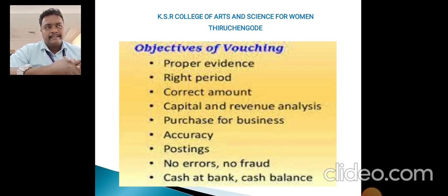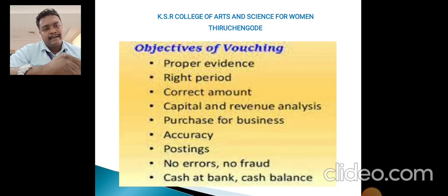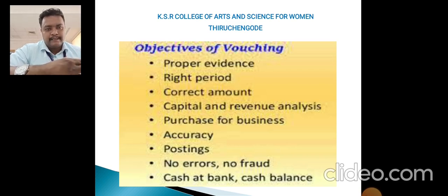The next objective is the correct amount — for example, if the transaction amount is one lakh but the voucher mistakenly shows one lakh fifty thousand, the amount discrepancy is important. Other objectives include capital and revenue analysis, accuracy in posting, and ensuring no errors and no fraud.